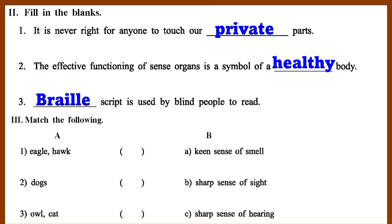Section 3: Match the following. 1. B — Sharp sense of sight. 2. A — Keen sense of smell. 3. C — Sharp sense of hearing.